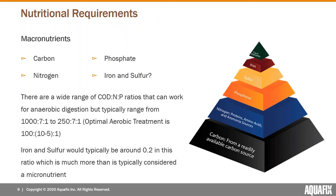Regarding nutritional requirements: macronutrients are carbon, phosphate, nitrogen, and arguably iron and sulfur. Iron and sulfur aren't directly toxic and you can add quite a bit without impairing function. However, sulfur-reducing bacteria compete with methanogens and produce hydrogen sulfide, limiting methane quality — the higher your sulfur levels, the more iron you'll likely need to precipitate out excess sulfur. The COD:N:P ratio for anaerobic digestion is roughly 1000:7:1, compared to aerobic's approximately 100:10:5:1.